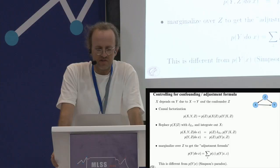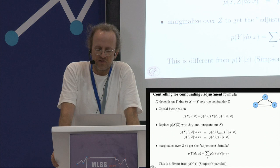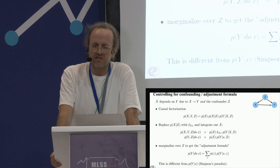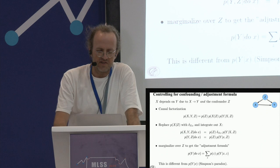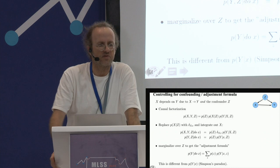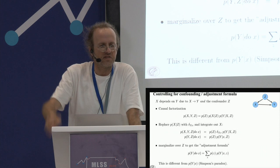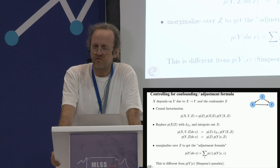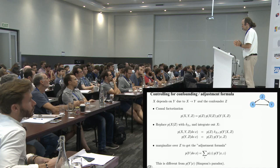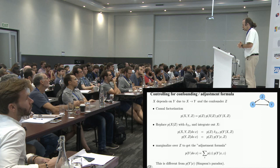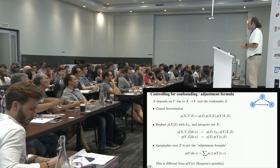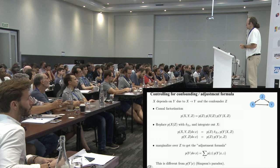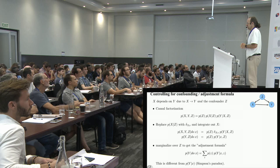A famous example involves kidney stones. There are two types of treatments: minimally invasive surgery and open surgery. Looking at the overall conditional probability of recovery given treatment, people seem more likely to recover with minimally invasive surgery — which would suggest performing that surgery. However, there's a confounder: the size of the kidney stone. Doctors are more likely to do the larger surgery for large kidney stones, and larger kidney stones also make it less likely that a person recovers.